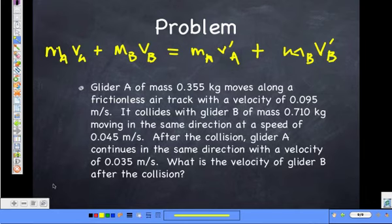Let's put our numbers in. So we have 0.355 times vA is what? 0.095. Plus 0.710 times 0.045.